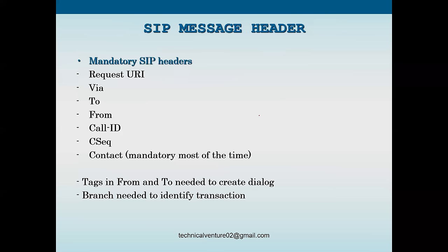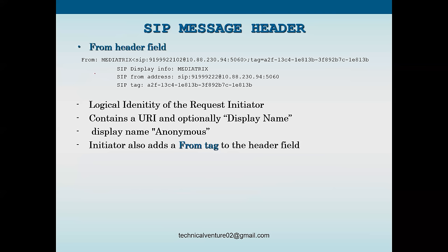Mandatory SIP headers are: Request-URI, Via, To, From, Call-ID, CSeq, and Contact. From and To are needed to create a dialogue; the branch parameter is needed to identify transactions. The From header field remains the same throughout the call regardless of message direction - whether messages are going from User Agent 1 to 2 or 2 to 1, From and To stay the same throughout the call.